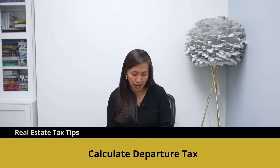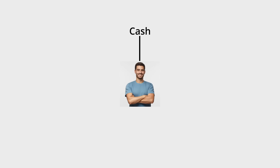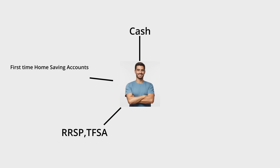If you've done your analysis and it makes sense to sever the tie — because you're starting a new business or have lots of investment income outside Canada — the first thing you need to do is calculate your departure tax and understand your ongoing tax filing obligations. The departure tax is calculated based on your assets, which can include cash, RSP, TFSA, FHSA, RRIF, pension income, and publicly traded shares in a non-registered account.